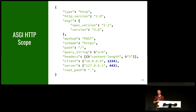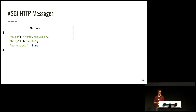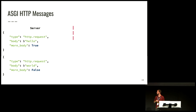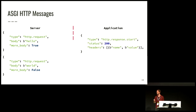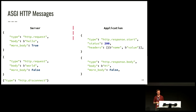As an application, you receive this scope when a client connects to the server. Then you wait for messages from the server. What you're likely to receive first is a message indicating that there's an HTTP request body coming through. To demonstrate streaming: the first message might just say 'hello' but indicate more body is expected. You then expect further messages until the body is complete — in this case, the final part 'world', with a flag indicating no more body is coming. Now the application can start sending a response: first the status and headers, then the body streamed out. Then you receive a disconnect message when the client disconnects.